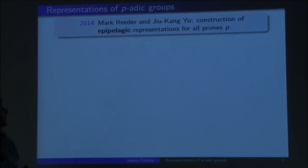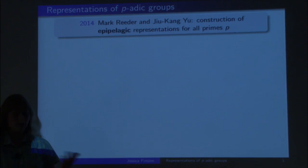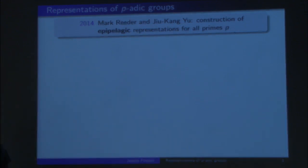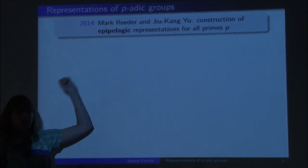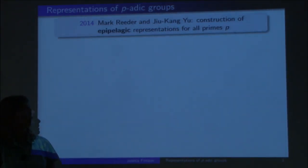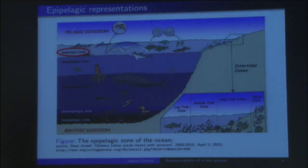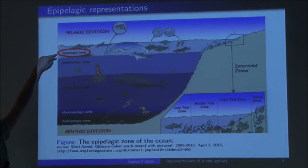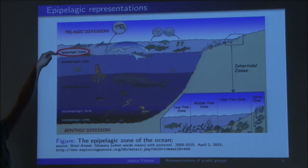What are these epipelagic representations? Reeder and Yu define the notion of depth — given a representation, they associate to it a depth, which is a non-negative real number. The epipelagic representations are those that have the smallest positive depth. We call them epipelagic because of oceanography: in oceanography, the upper zone of the ocean — the zone of smallest positive depth — is called the epipelagic zone, and that's where the word comes from.